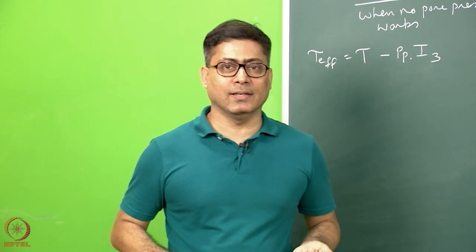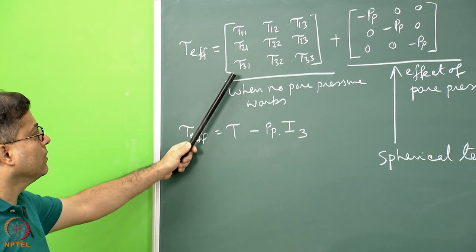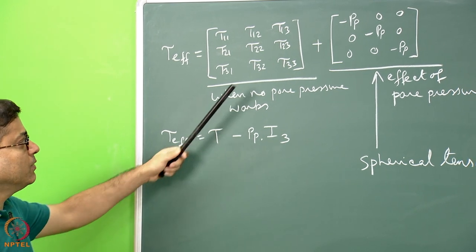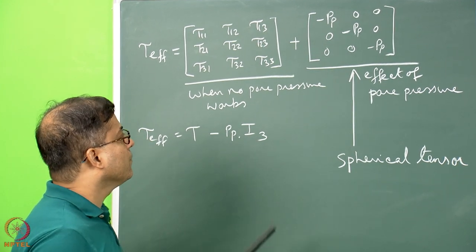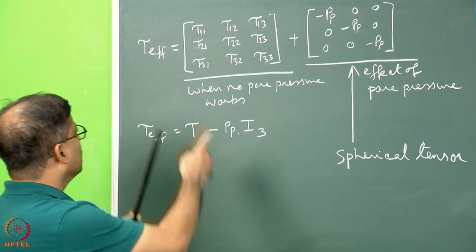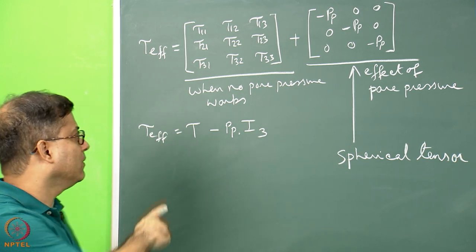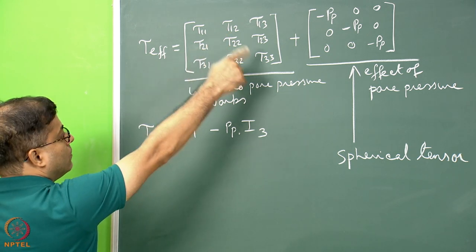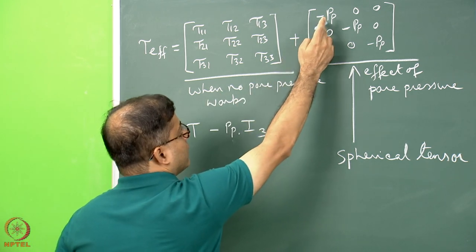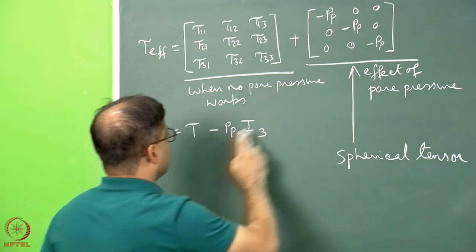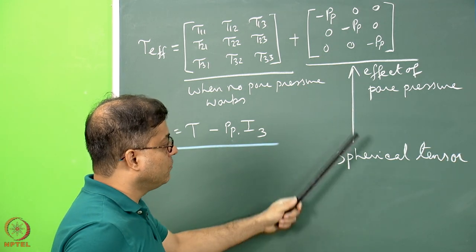Looking at other interesting things about second rank tensors: tau_effective in the pore pressure case can be written as the tau matrix (no pore pressure) plus a diagonal matrix with minus PP on the diagonal and zeros for shear terms. This gives tau_effective = tau − PP·I3, because we can factor out minus PP and get the identity matrix I3. Note that the effect of pore pressure alone is a spherical tensor.